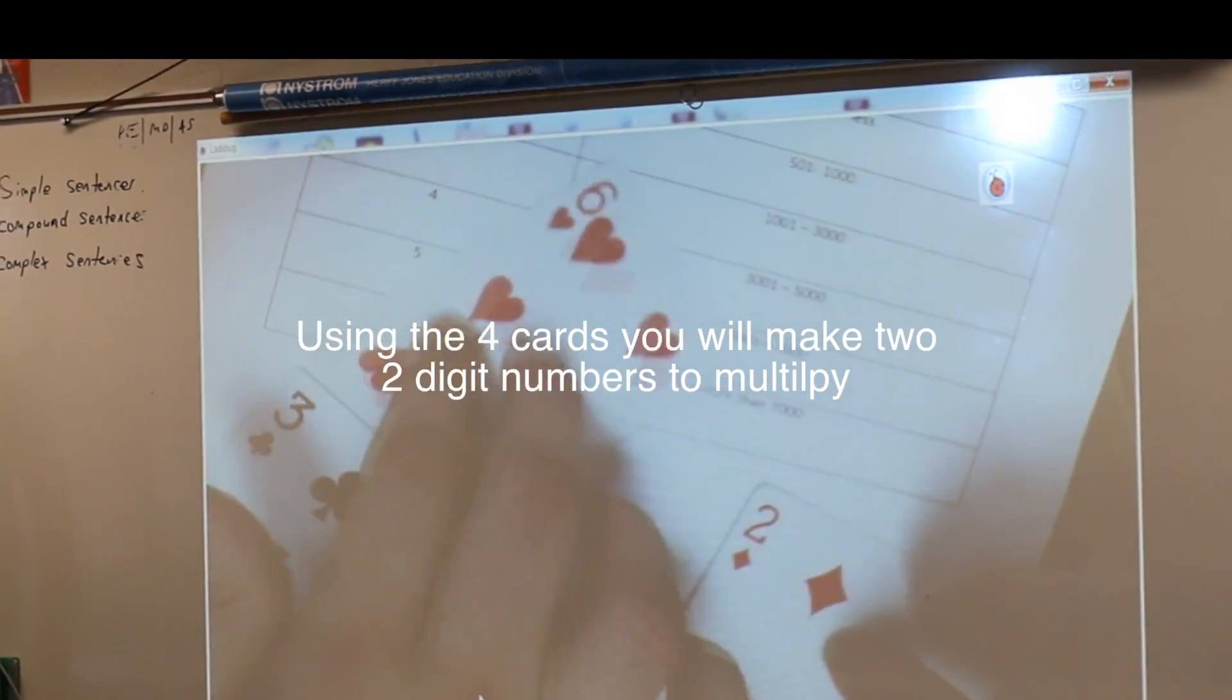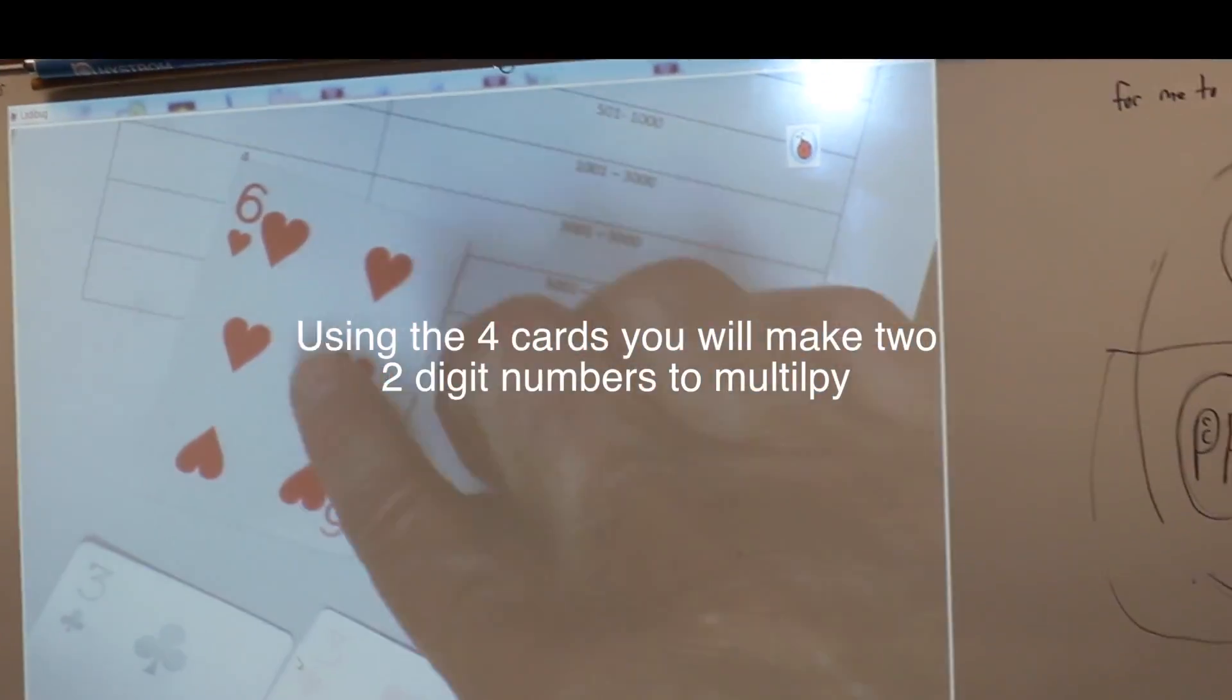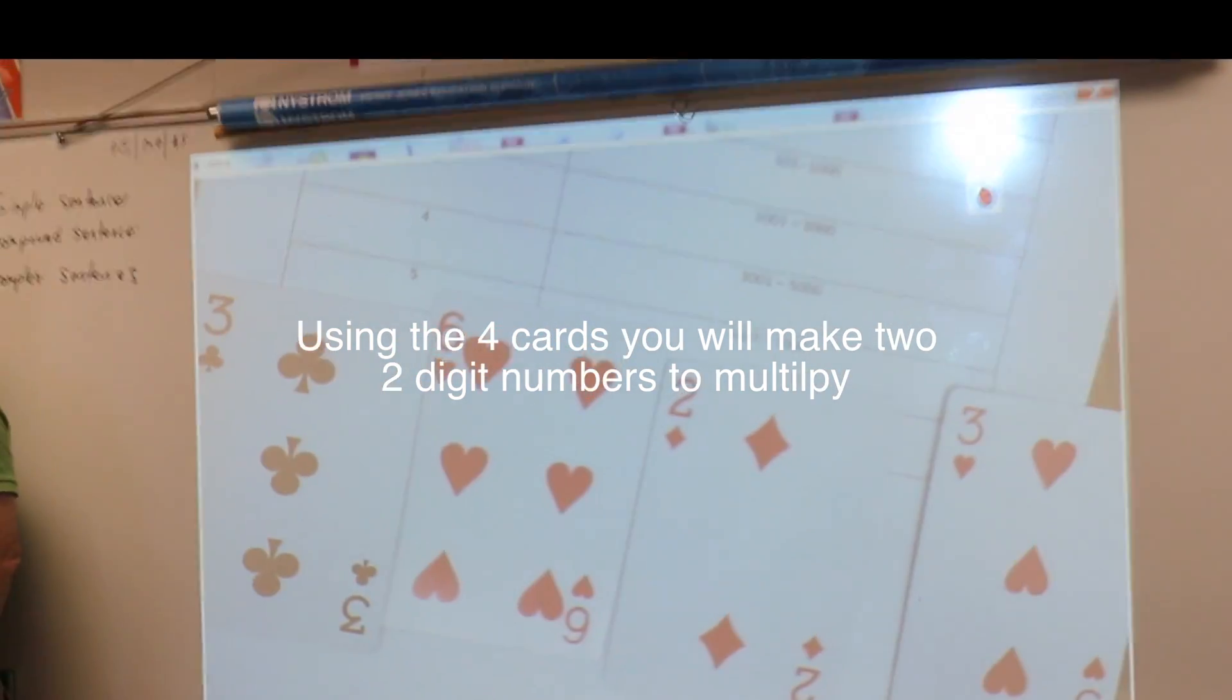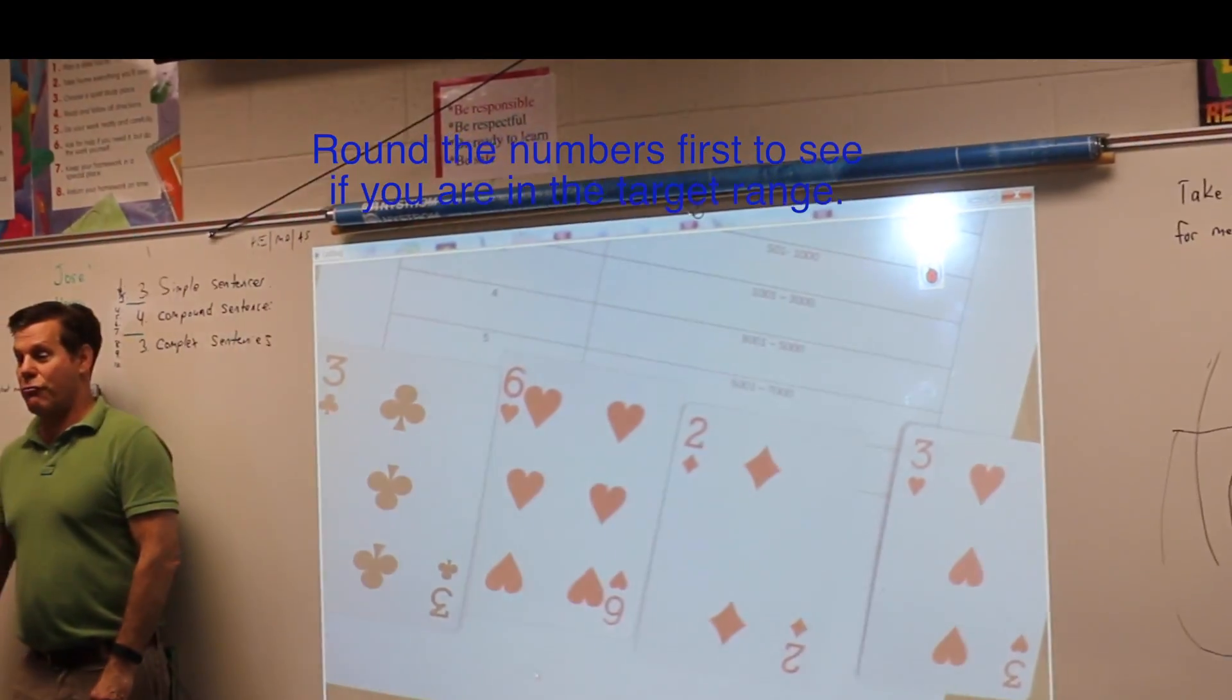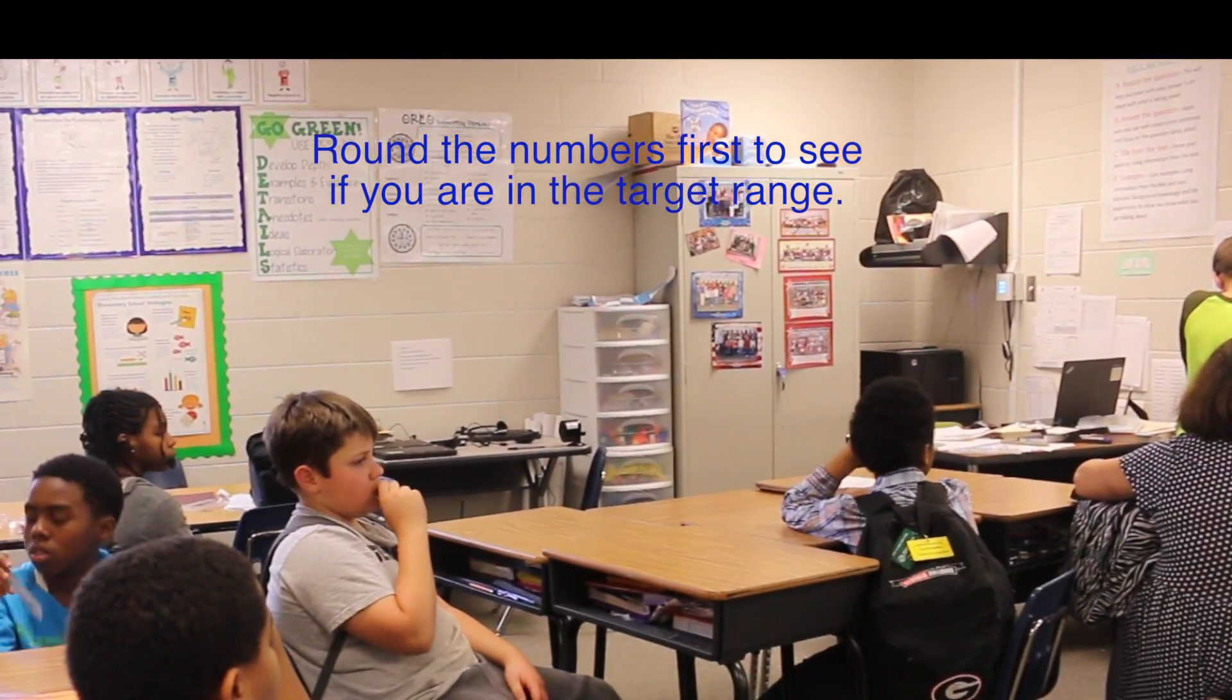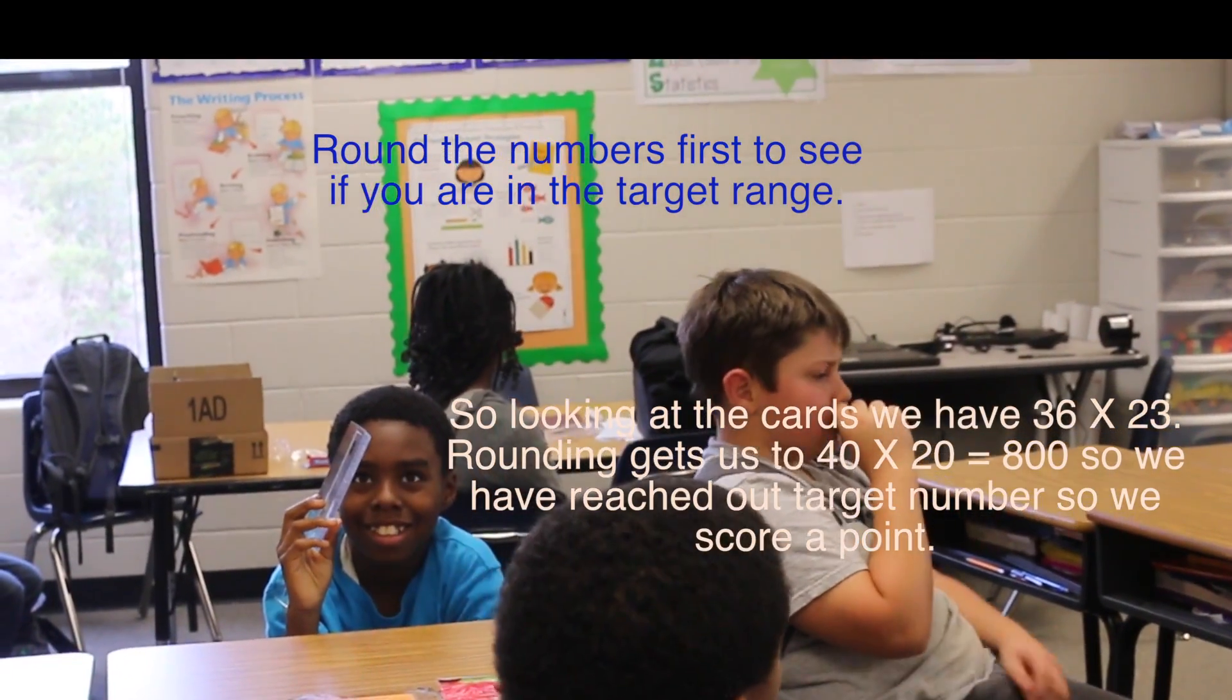And you want to, for this one, make the least number, like the smallest number, so 23. So what's 36 times 23?